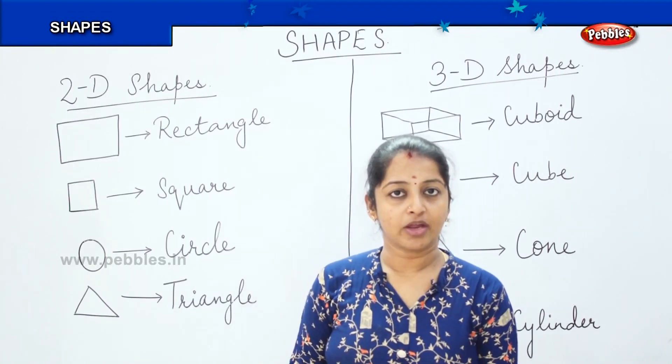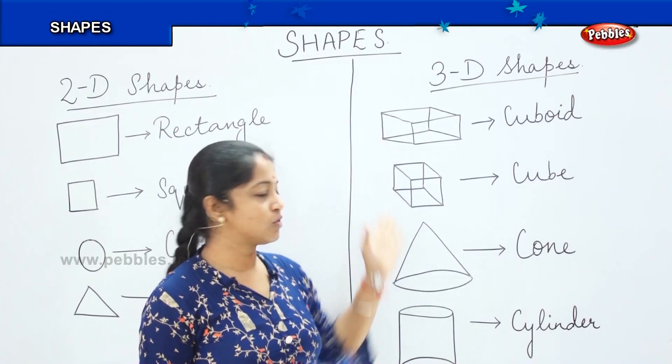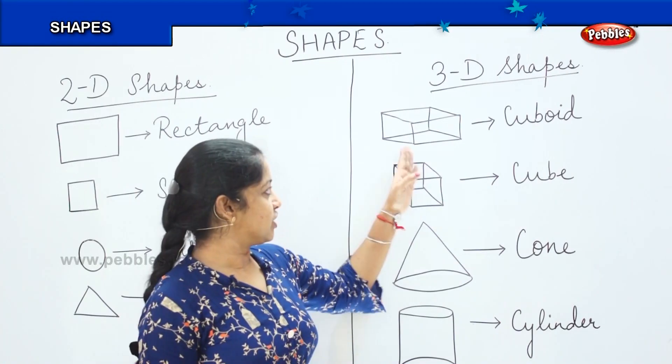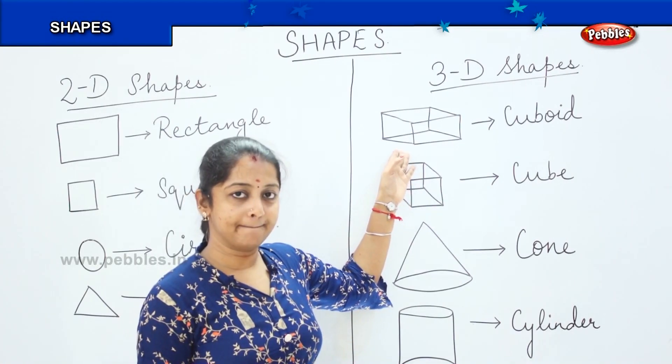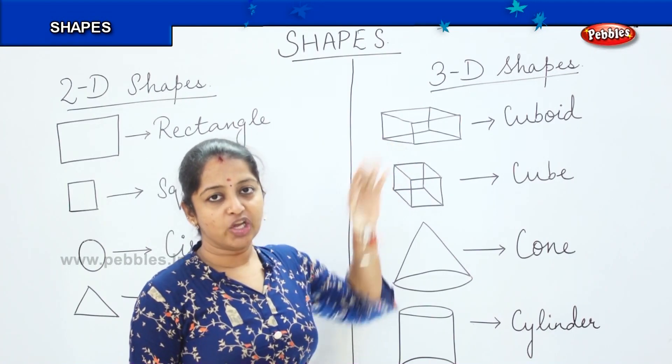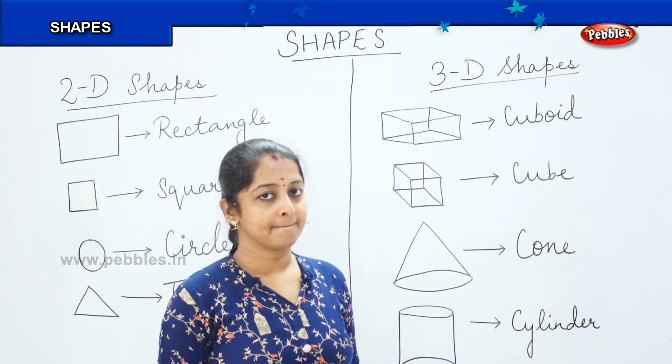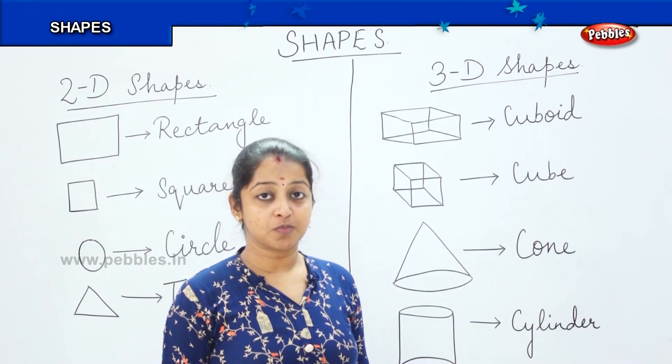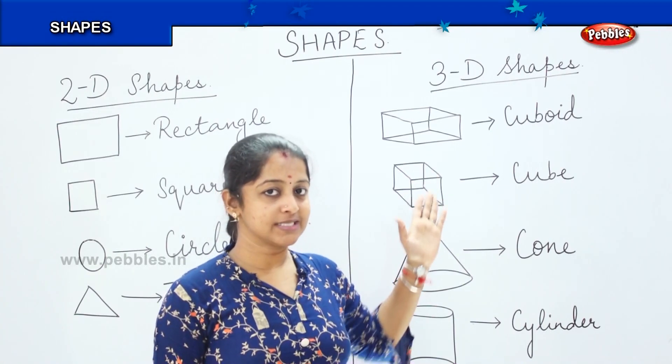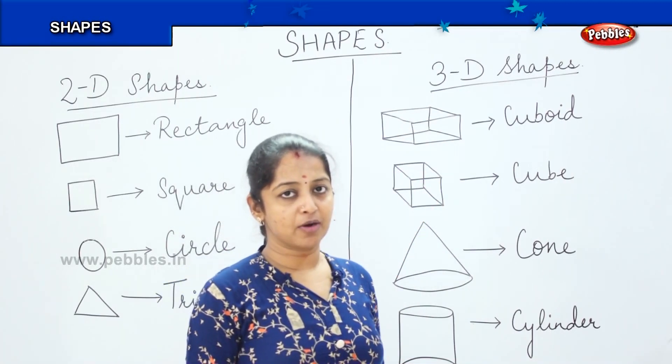So now we will be moving on to the 3D shapes. Can you see here? The shapes drawn on the board. What is this shape called as the first shape? Yes, it is a cuboid. Can you give me an example of a cuboid? Where can you see a cuboid? Very good. A matchbox is a cuboid. A pencil box is a cuboid. Where it has got, how many sides? Can we count the number of sides here?